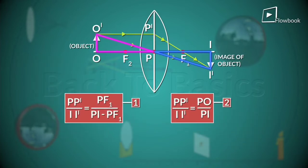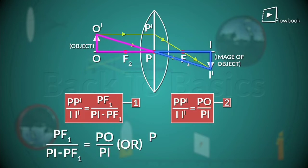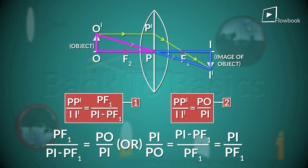Thus, from one and two, we can say PF1 by PI minus PF1 is equal to PO by PI. Or, PI by PO is equal to PI by PF1 minus one.